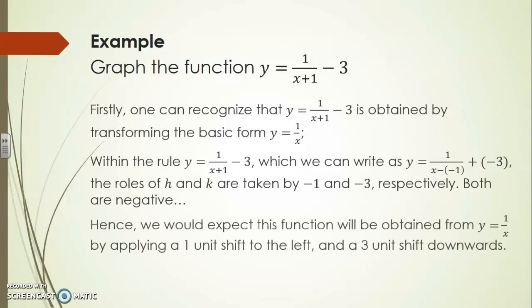So we would expect that this function will be obtained from y equals 1 over x by applying a 1 unit shift to the left because the size of h is 1. h itself is minus 1 but the size of that number is 1 and 3 units down because of the k value being minus 3.